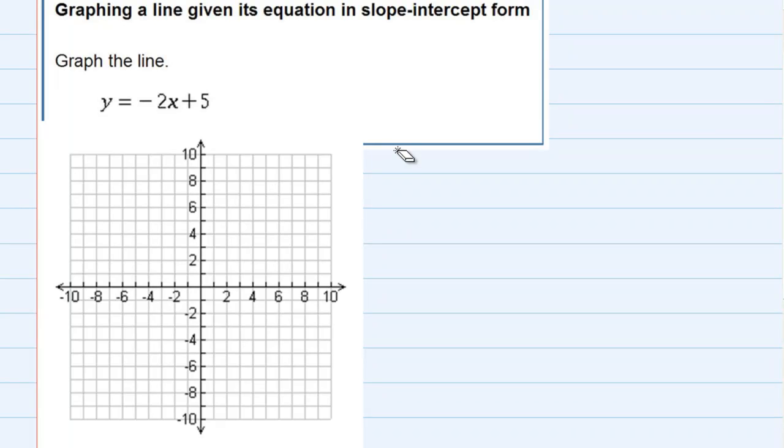Graphing a line given its equation in slope-intercept form, we're asked to graph the line y equals negative 2x plus 5. There's more than one way to do it, but for this example, I'm going to make a table.